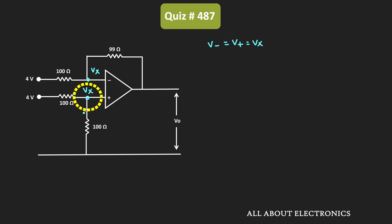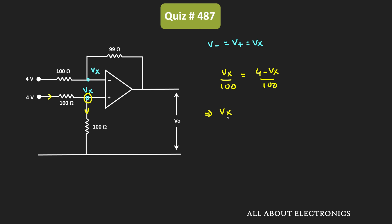Now let's apply KCL at the non-inverting node to find the value of voltage Vx. Applying KCL, Vx divided by 100 Ohm equals 4 minus Vx divided by 100 Ohm. Since the op-amp is ideal, no current flows into the op-amp terminal. From this we get Vx equals 4 minus Vx, so Vx equals 2V. The voltage at this node is equal to 2V.